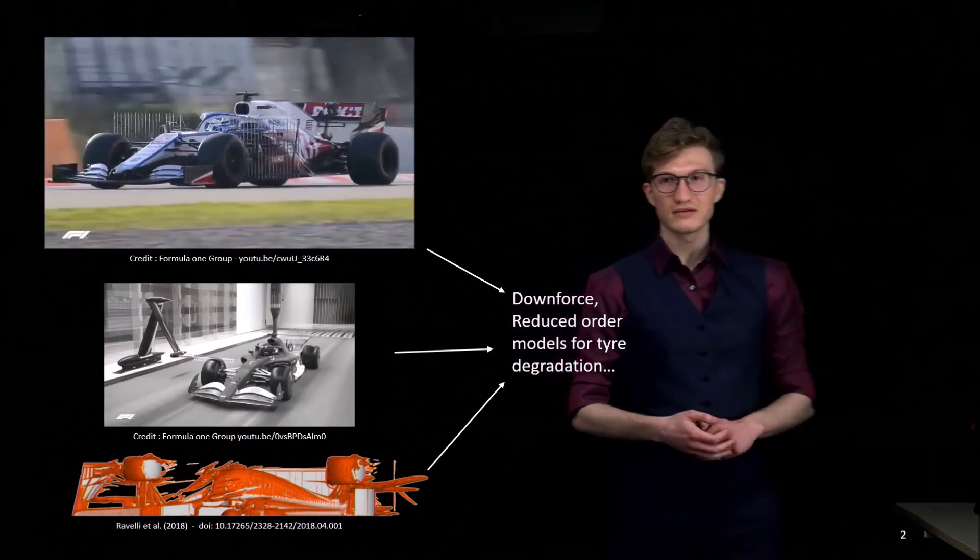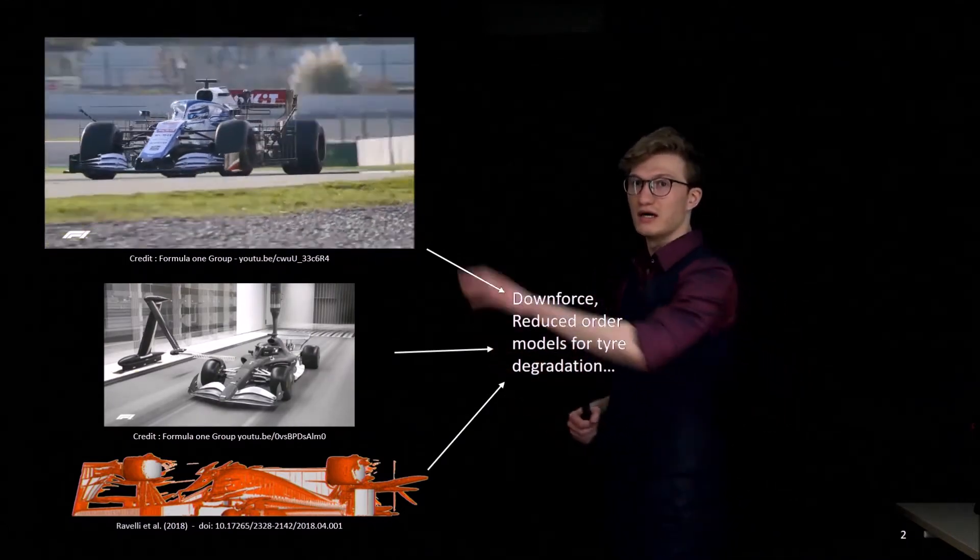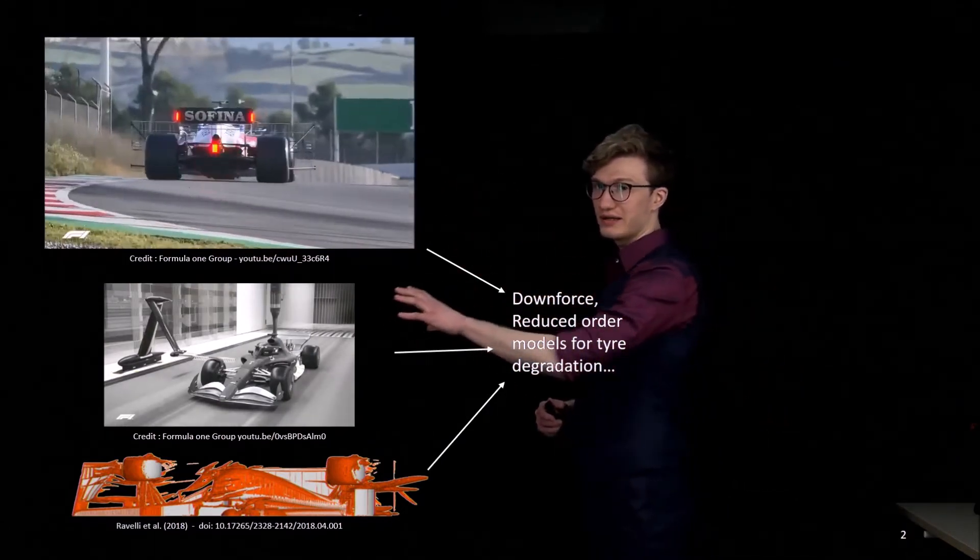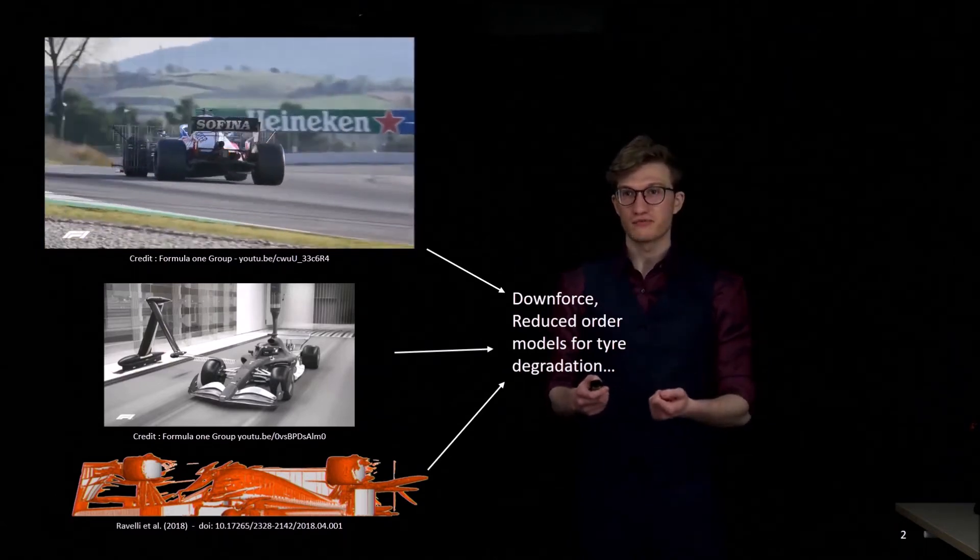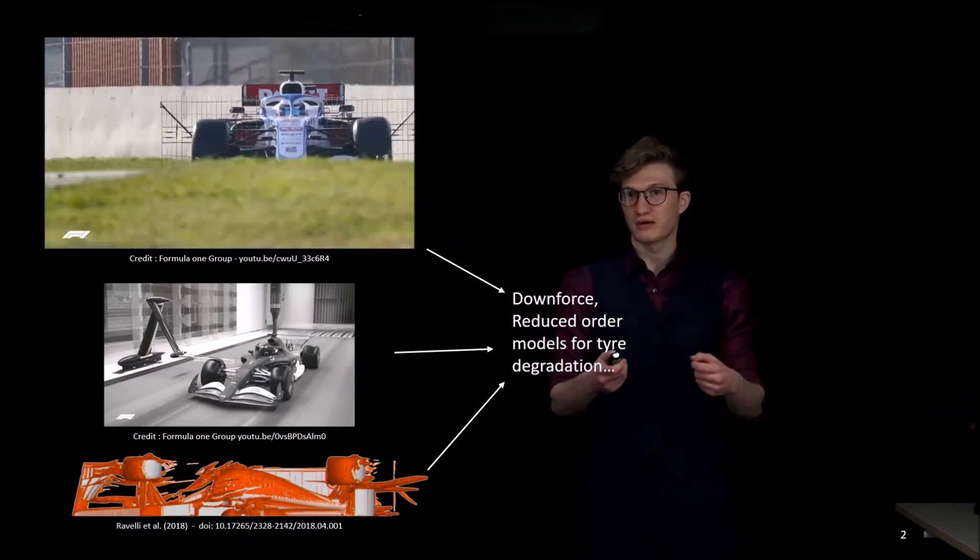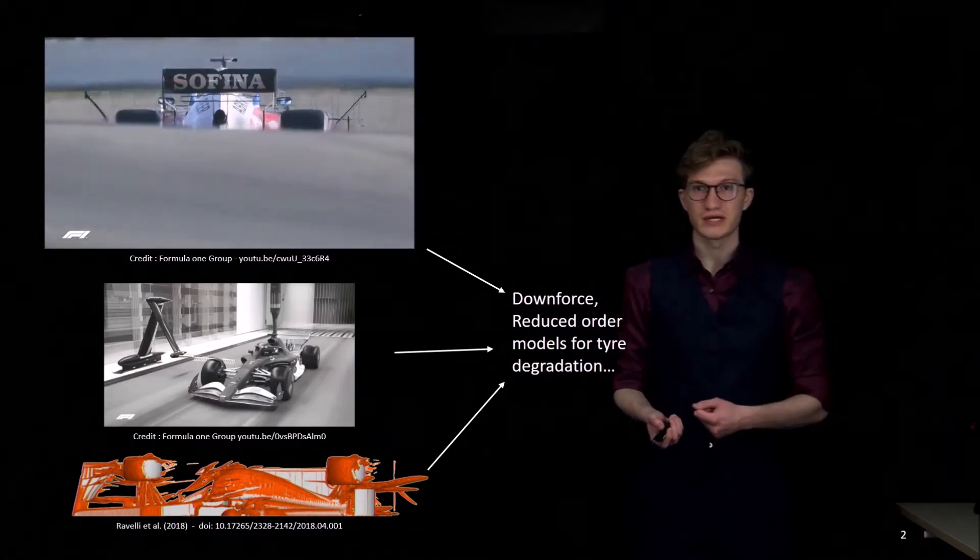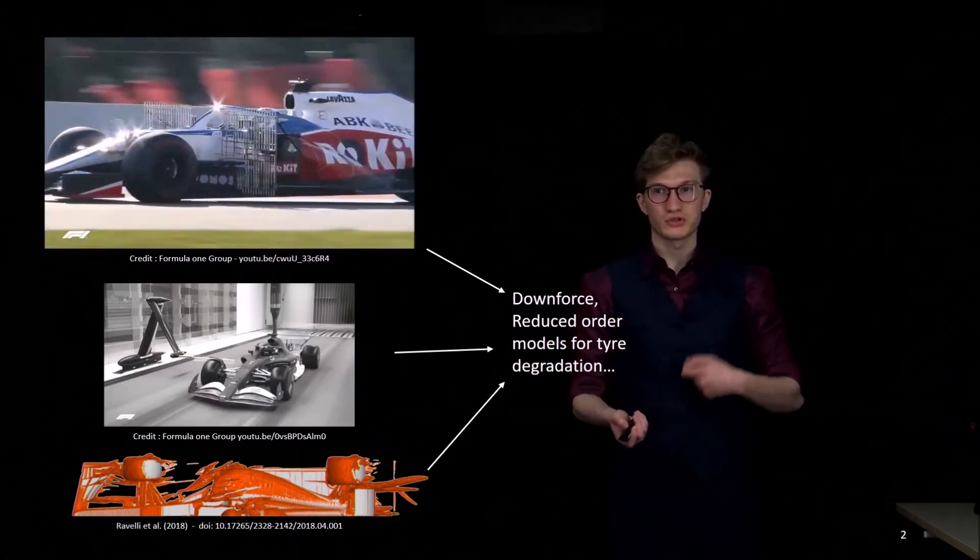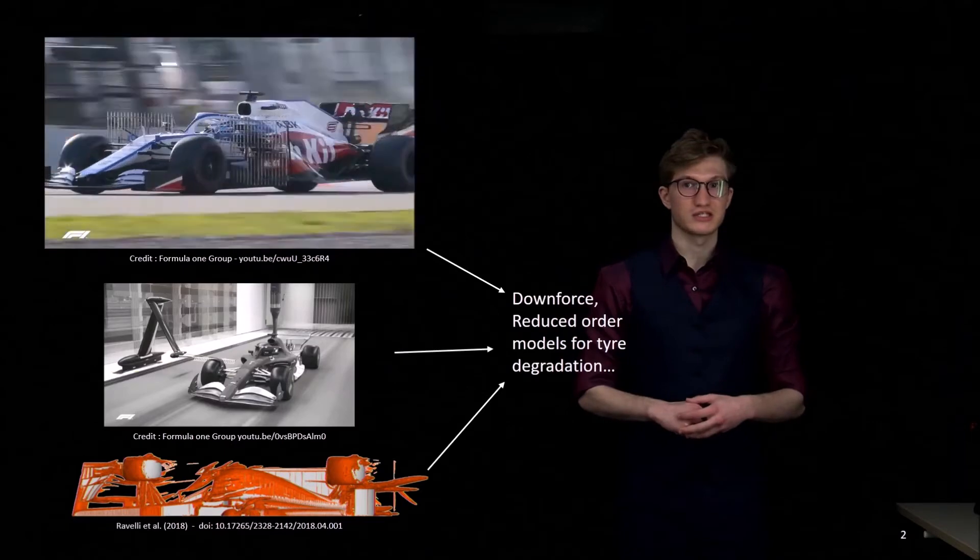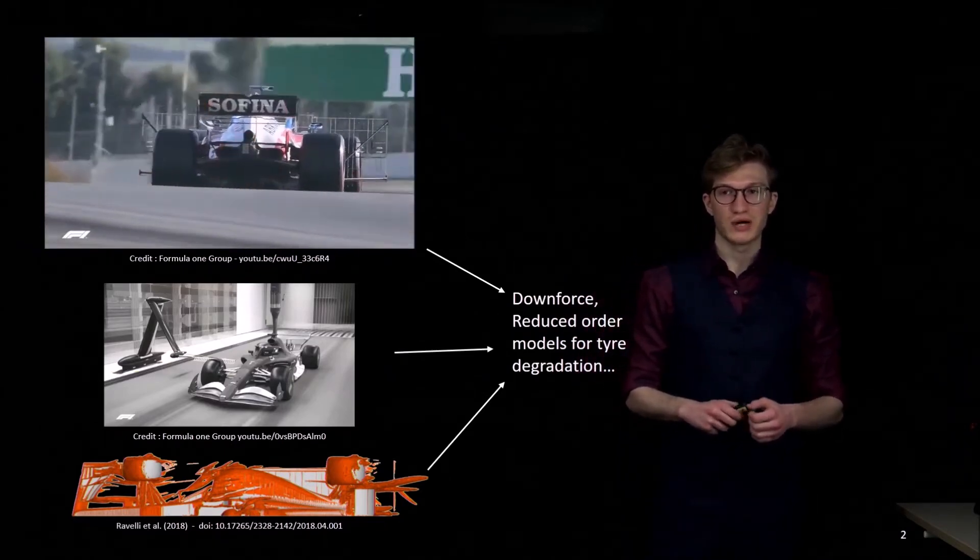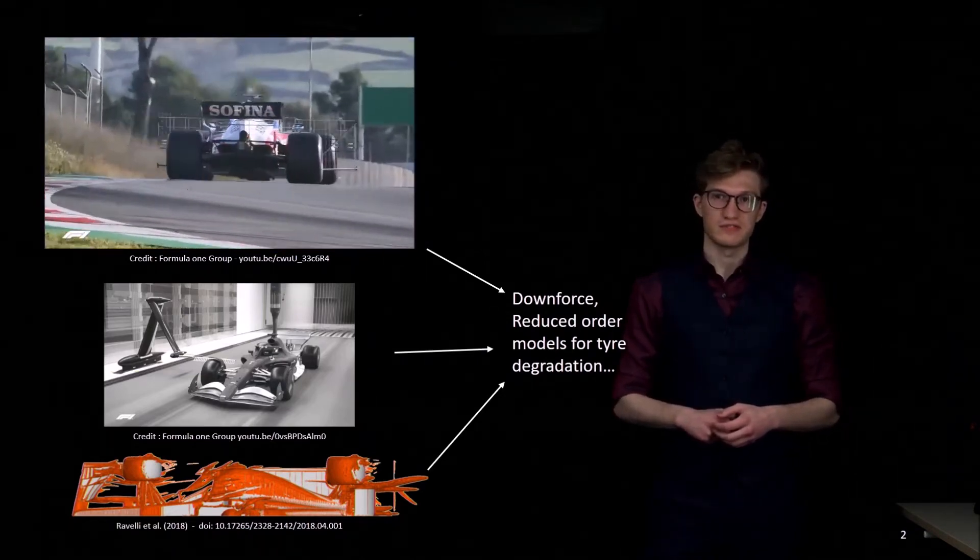To illustrate our problem, let's have a look at an engineering competition. In Formula One, one of the major issues is to get a good correlation between the data that we collect on the track, the one that we collect in a wind tunnel, and the one from numerical simulations. All these three data sources are very interesting. They have different levels of accuracy, precision, sparsity, level of representativity, and also they are all very expensive. In the end, what we want is to get a good estimation of the downforce, to get reduced order models of the cooling of the engine, of the tire degradation. And one way of doing this is by using physics-informed neural networks.